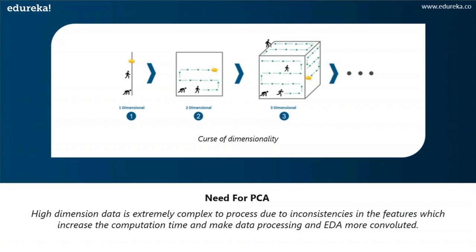As you can observe, the complexity is increasing as the dimension of the plane increases. In real life, the high dimensional data we're talking about has thousands of dimensions that make it very complex to handle and process. High dimensional data can be easily found in use cases like image processing, natural language processing, image translation, and so on. This is exactly what the curse of dimensionality means. To get rid of this curse, we came up with a process called dimensionality reduction. Dimensionality reduction techniques can be used to filter only a limited number of significant features needed for training your model, and this is exactly where principal component analysis comes into the picture.